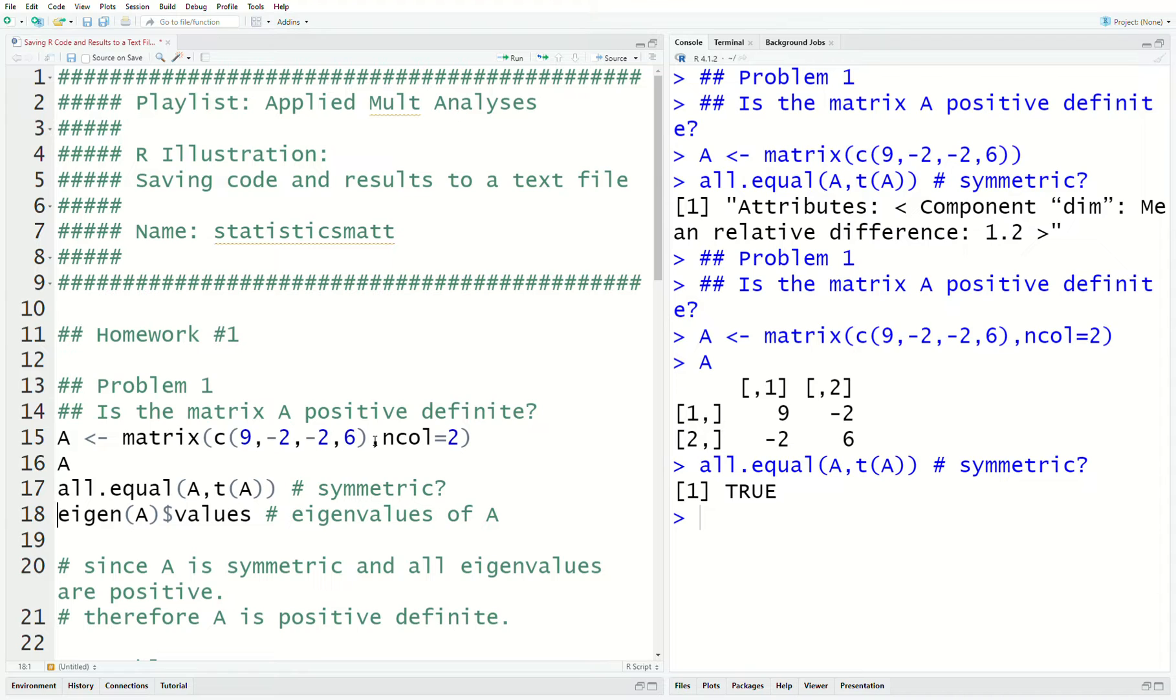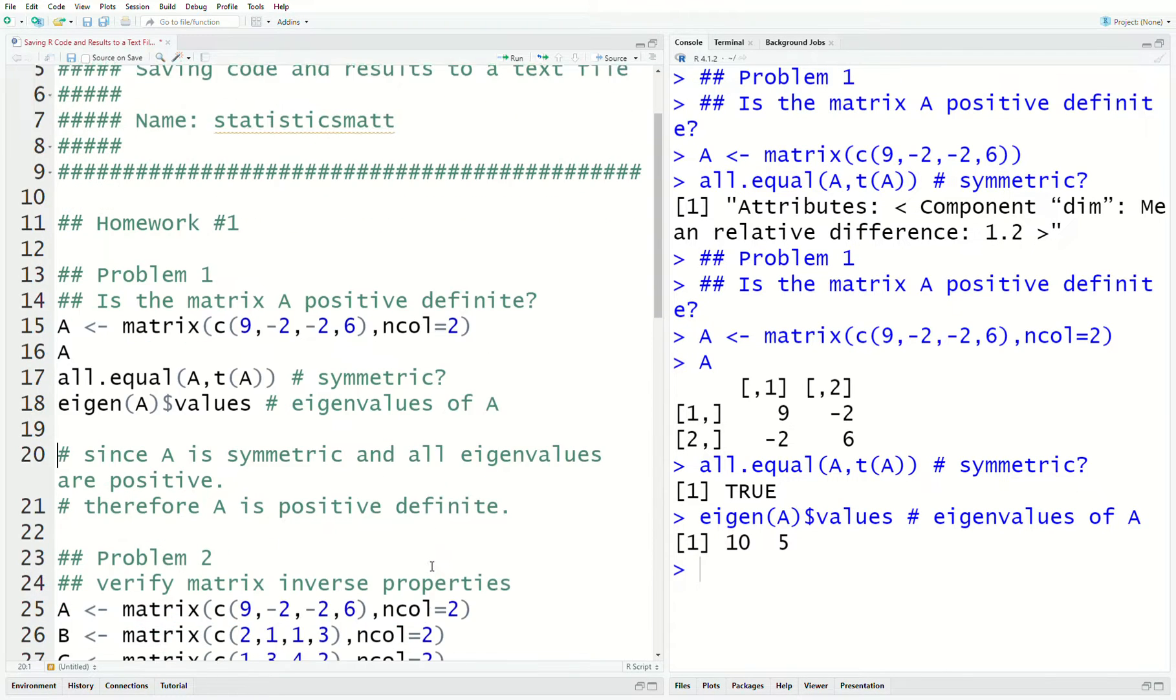And this is it. And now, I look at A transpose are the same. So, it's symmetric. And then I look at the eigenvalues. They're all positive. So, a symmetric matrix with positive eigenvalues is positive definite. And so, A is positive definite. And that's how we showed it.